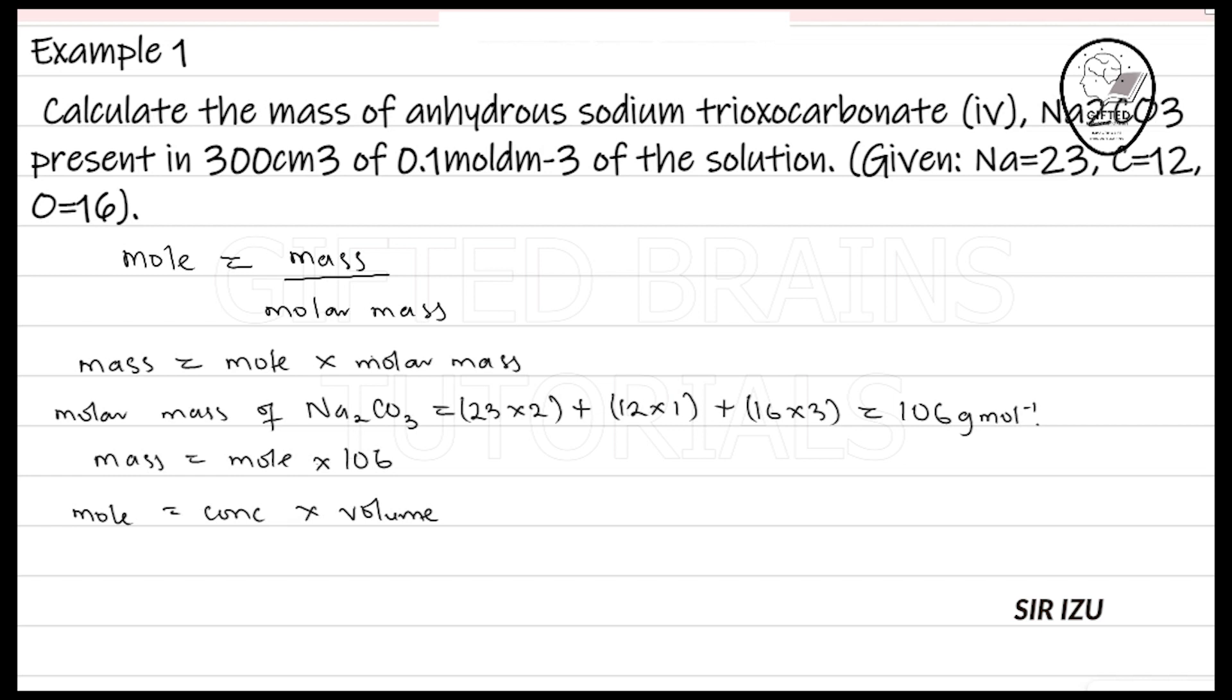What is the concentration? It is 0.1 multiplied by the volume, 300 cm³, but remember we have to convert to dm³. So that will give us 300 over 1000, and this will be 0.3. So the mole equals 0.03 mole.